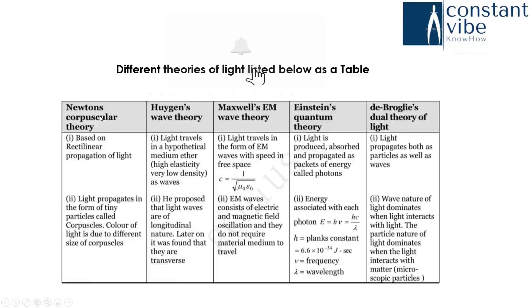First one is Newton's corpuscular theory. In this theory, he explains light propagates in the form of tiny particles called corpuscles. Color of light is due to the different size of corpuscles. So corpuscular theory, based on this theory, rectilinear propagation of light. Light is traveled in a straight line and in the form of tiny particles.